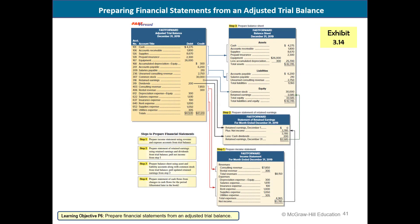The financial statements are prepared from the adjusted trial balance. First prepare the income statement: revenues minus expenses gives net income. Then prepare the statement of retained earnings using ending net income minus dividends. Then prepare the balance sheet including ending retained earnings, common stock for equity, and assets and liabilities. Remember: total assets equals total liabilities and equity.